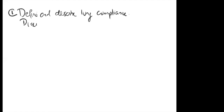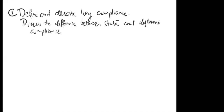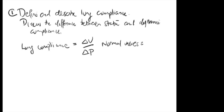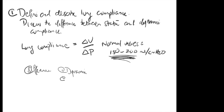Next question: define and describe lung compliance and discuss the difference between static and dynamic compliance. Compliance is the change in volume for a given change in pressure. Normal lung compliance is 150-200 mL/cmH2O. It's lower under anaesthesia because it's dynamic compliance being measured, and you lose about 20% of FRC under general anaesthesia. On the anaesthetic machine, you're measuring total respiratory compliance.